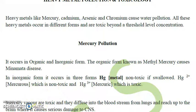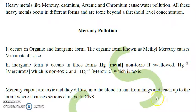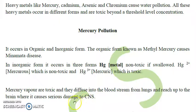Mercury vapors are toxic and they diffuse into the bloodstream from lungs and reach up to the brain, where they cause serious damage to the central nervous system (CNS).